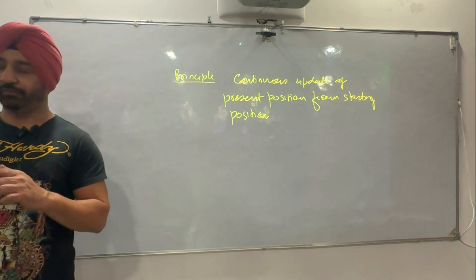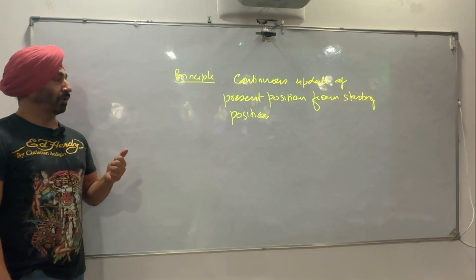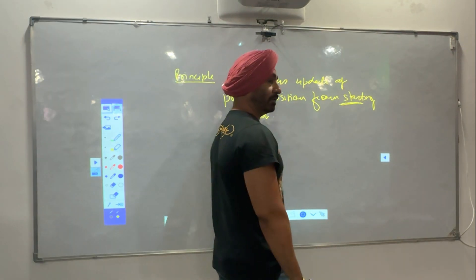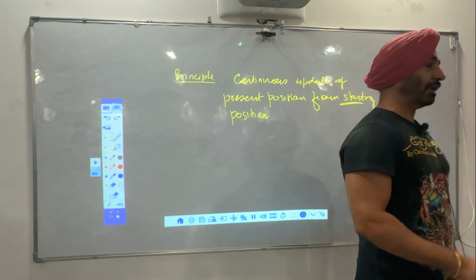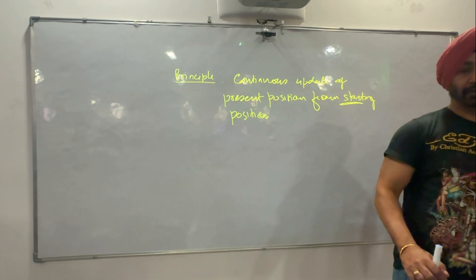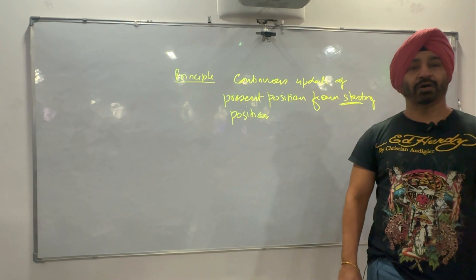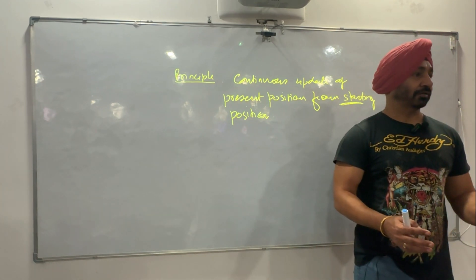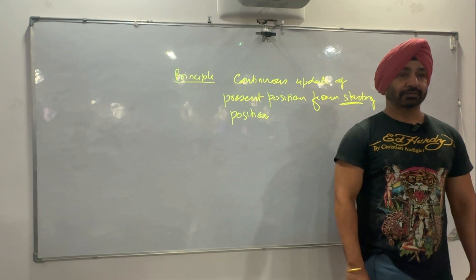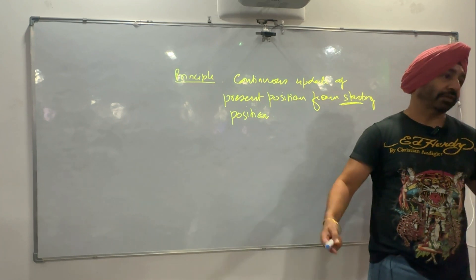It is a continuous update of present position from the starting position. You have to show the system where the starting position is. Earlier, you had to feed the latitude and longitude of the starting position. That is why all gates — wherever aircraft are parked, aero bridges, gates, bays — on the charts they have six-digit coordinates. You have to show the system from where you are starting, and from there it will continue to update its position.